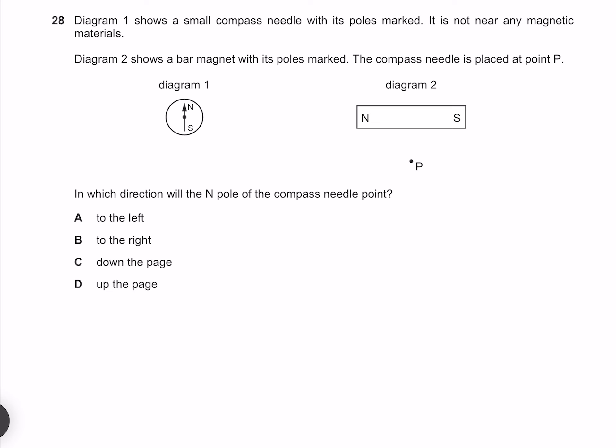Diagram 1 shows a small compass needle with its poles marked. It is not near any magnetic materials. Diagram 2 shows a bar magnet with its poles marked. The compass needle is placed at point P. In which direction will the end pole of the compass needle point? Our north pole is going to be attracted to our south pole, which means it's going to point towards the right.